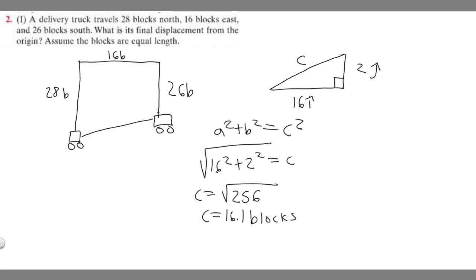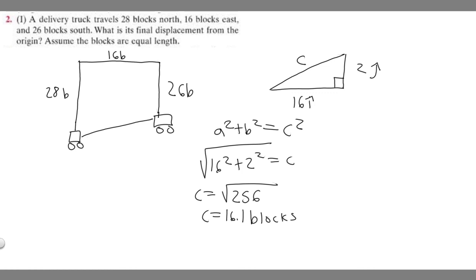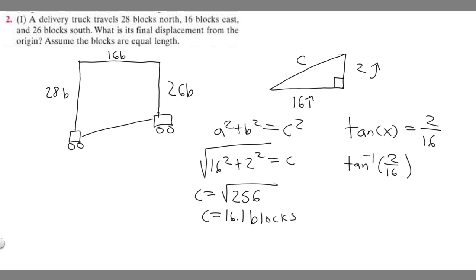But what we also need to find is the direction — all we did was get the magnitude, now we have to find the direction. The way we find the direction is by finding this angle. If we know these two lengths, we can say that the tangent of this angle — let's call it x — is going to be equal to opposite over adjacent, so it's going to be 2 over 16. So the tangent of x equals 2 over 16. To get x, we take the arc tangent: the arc tangent of 2 over 16 equals 7.125 degrees, which I'll round to 7 degrees.